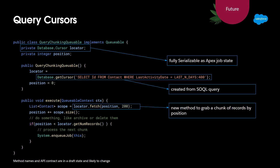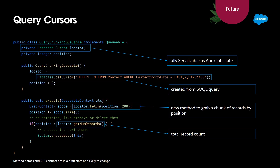Once you've got your results, you process them and then decide: are there more records to process? Check against the overall size of the query result. If there are, pass the cursor on to the subsequent queueable and it will pick up from the tracked position. It's also powerful for page controllers or for parallelizing the processing of a job by chunking records between different queueable jobs.